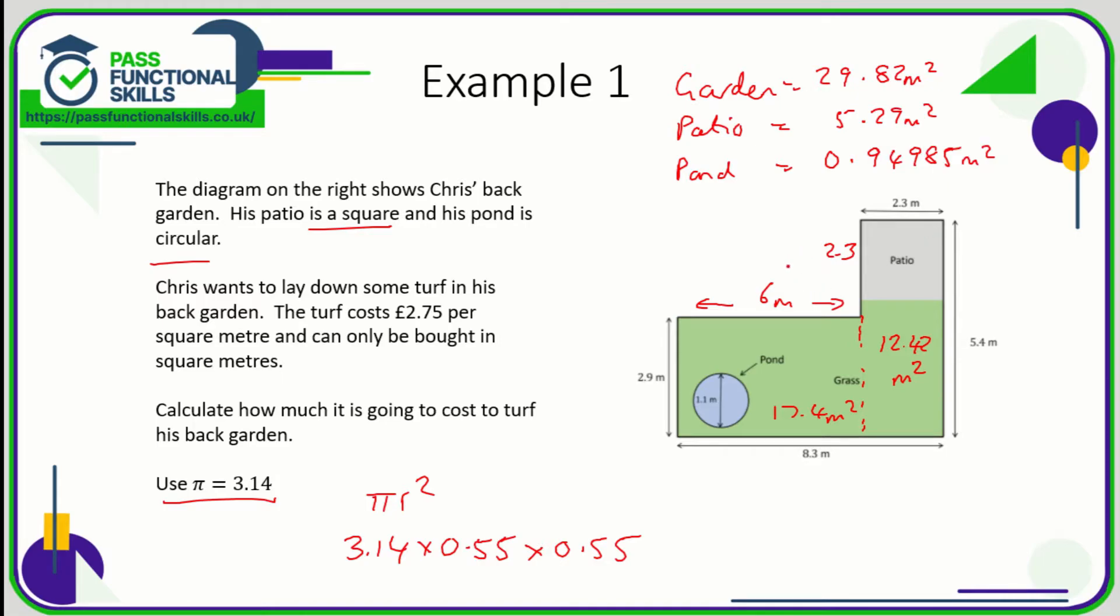So the area of the turfed part of the garden is going to be the 29.82 minus the patio, because that's not being turfed, minus the pond, because that's definitely not being turfed, minus 0.94985.